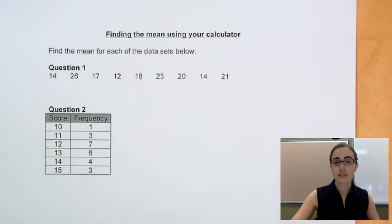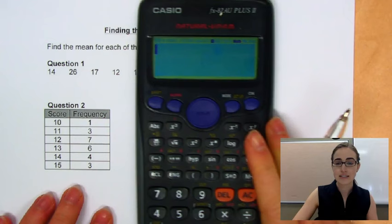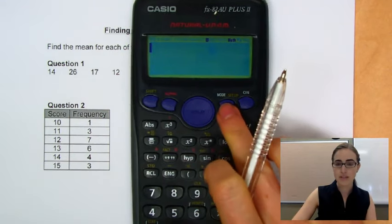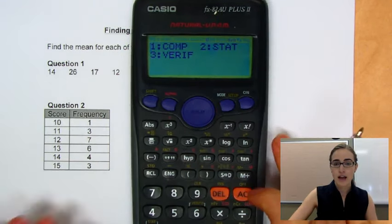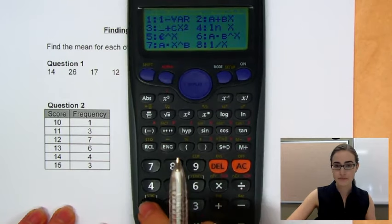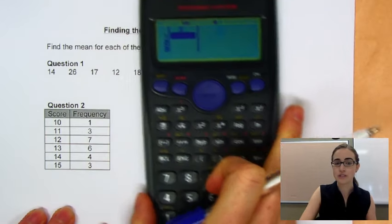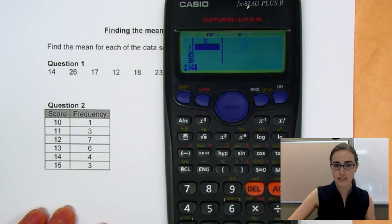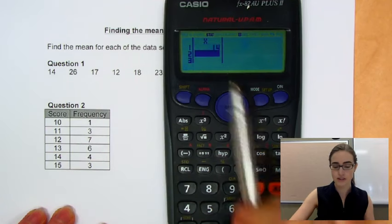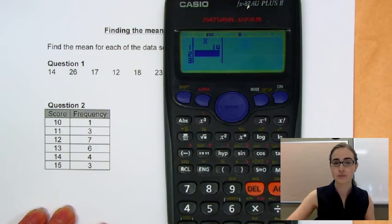But if we wanted to use the statistics mode in our calculator, first we have to put it in statistics mode. So we're going to press this button here that says mode, and then we want stats, so we're going to press the button 2 and then just 1. So that's going to give us a column here where we can enter our scores in. So we could enter 14 and press equals and it'll enter a 14 in there. And then we can keep going for all of the rest of our scores as well.